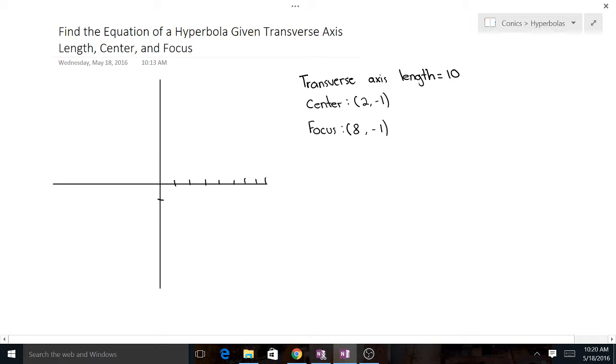In this example, we're going to find the equation of a hyperbola when we are given transverse axis length, the center, and the focus. First thing I would do is ask, what is the transverse axis? Transverse axis is always 2a, so 2a equals transverse axis length.